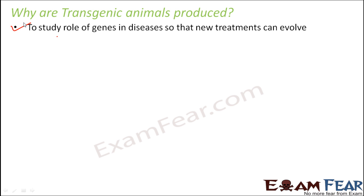These transgenic animals become a sort of experimental subject. Human beings are trying to mix and match genes of different animals to see the new organisms which are evolving. They can study what kinds of genetic diseases take place, how they are caused, and how they can be treated — because everything is under the control of human beings. They can also try new treatments on transgenic animals and see how those treatments impact or cure the animals.